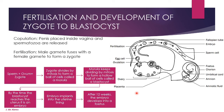The development of the zygote into a blastocyst happens just after fertilization. Copulation is when the penis is placed inside the vagina and spermatozoa are released. Fertilization is when the male gamete fuses with a female gamete to form a zygote. The zygote divides by mitosis to form a ball of cells called the morula. It divides more to form a hollow ball of cells called the blastocyst. The blastocyst divides further to form the embryo, which implants into the endometrium. It then becomes a fetus by 8 to 12 weeks.